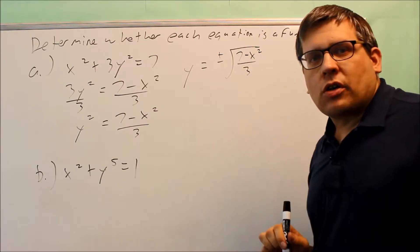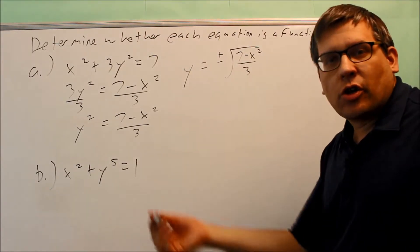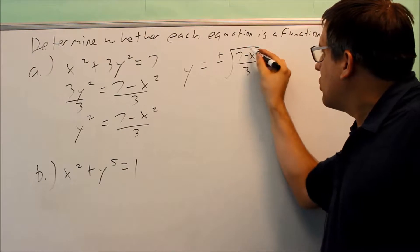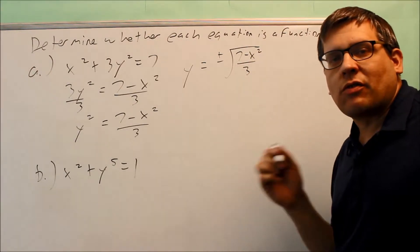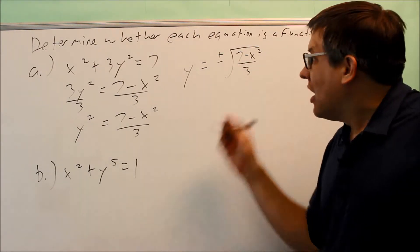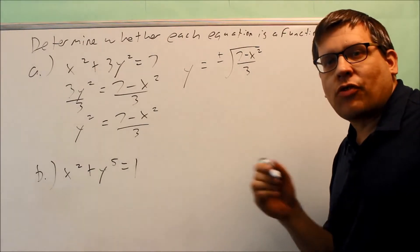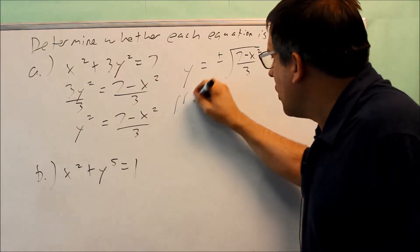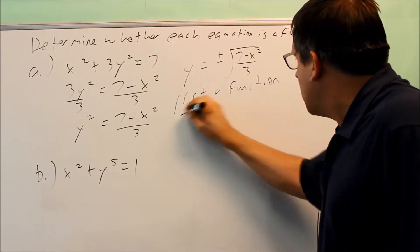I have 7 minus x squared over 3. Let's suppose that we pick a sample value for x. Let's say we pick 0 for x and we decide to put that in here. Well, what happens is if I have a 0 in here for x, that means I get plus or minus the square root of 7 thirds. So that's saying that if I put an x value of 0 in there, I'm getting two different y values. Because of that, I know that it's not a function because a function for each input should only have one output. So this is not a function.